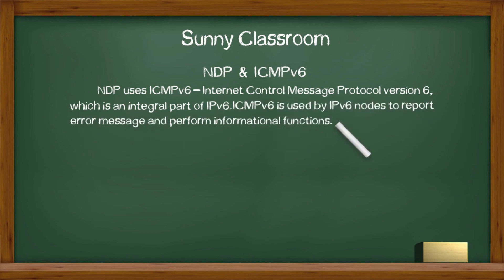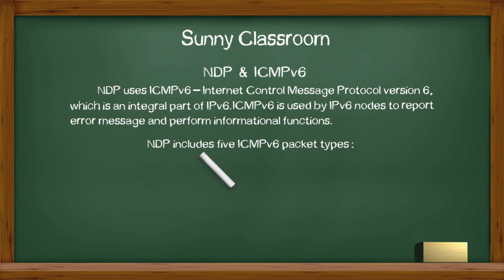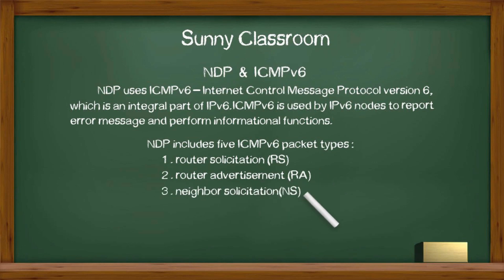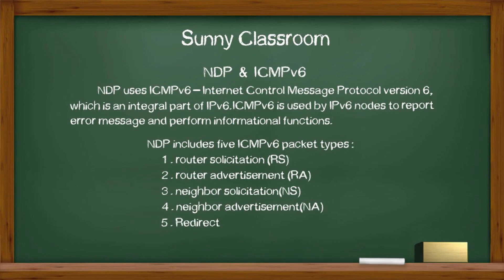ICMPv6 is used by IPv6 nodes to report error messages and perform informational functions. NDP includes 5 ICMPv6 packet types: 1. Router Solicitation, or RS. 2. Router Advertisement, or RA. 3. Neighbor Solicitation, or NS. 4. Neighbor Advertisement, or NA. 5. Redirect, or Redirect Message.